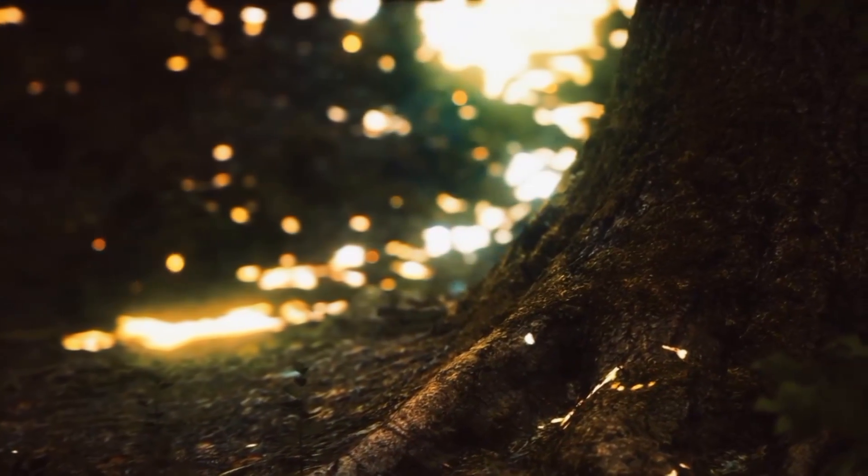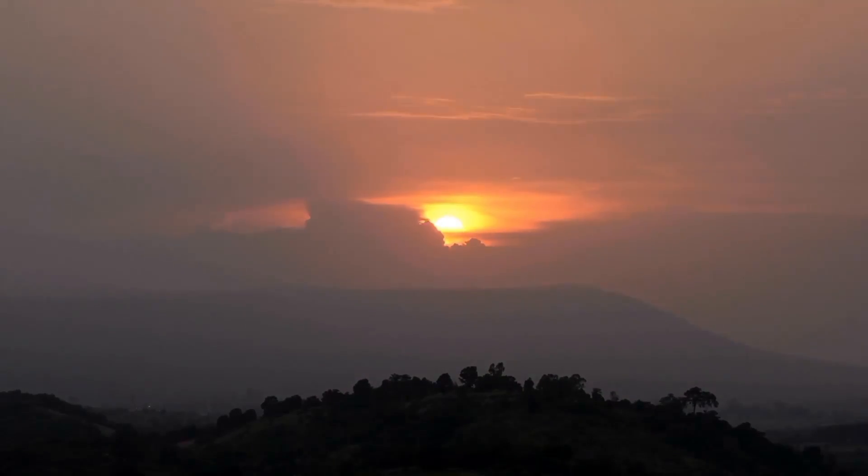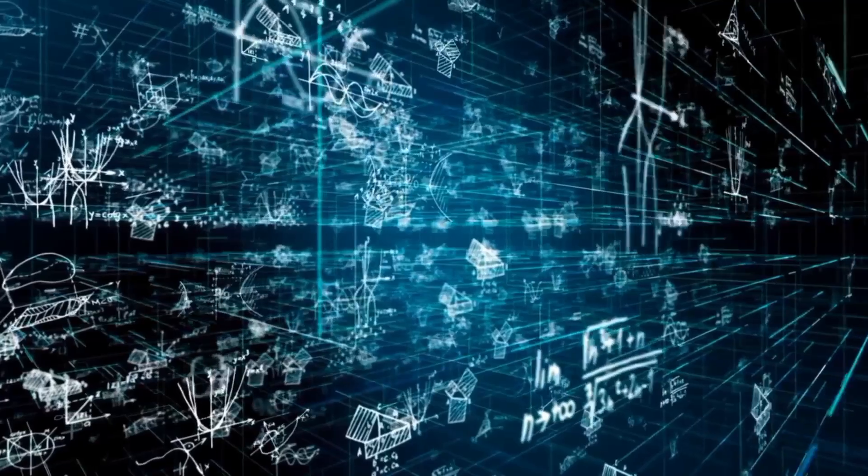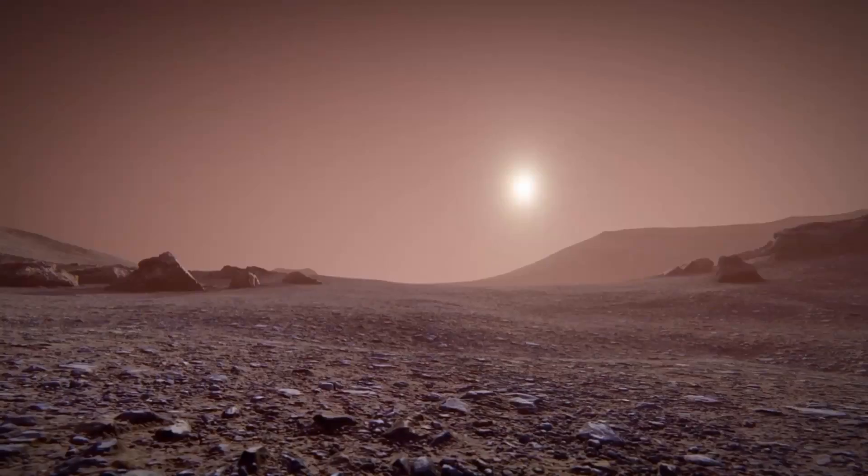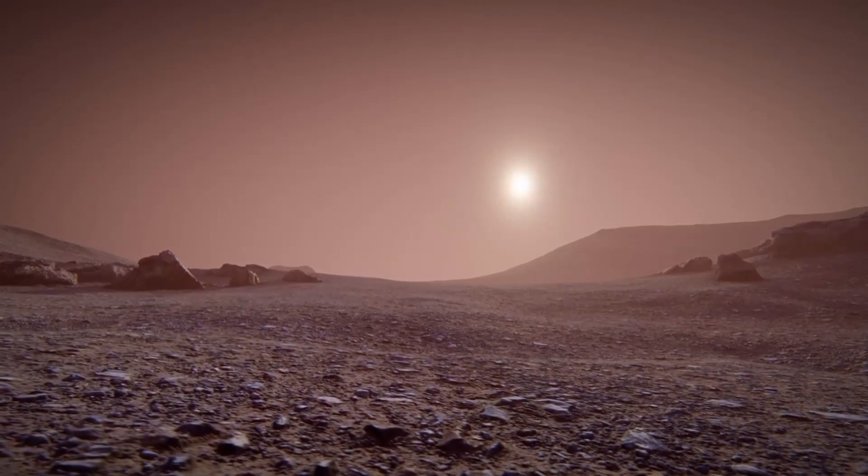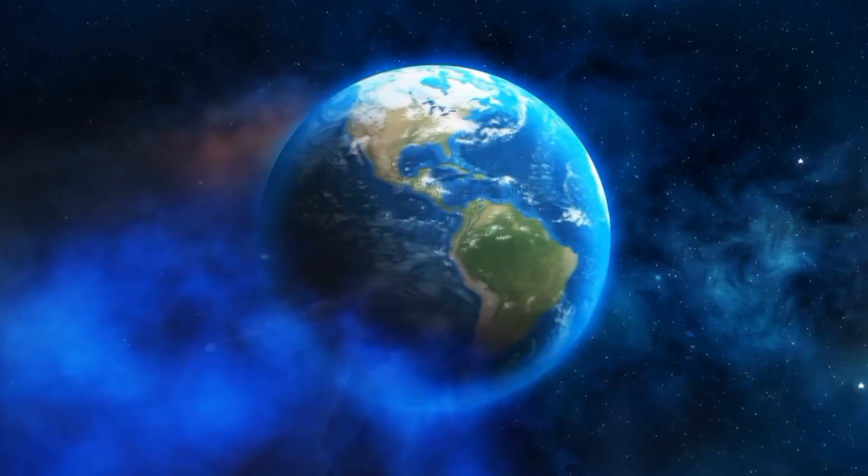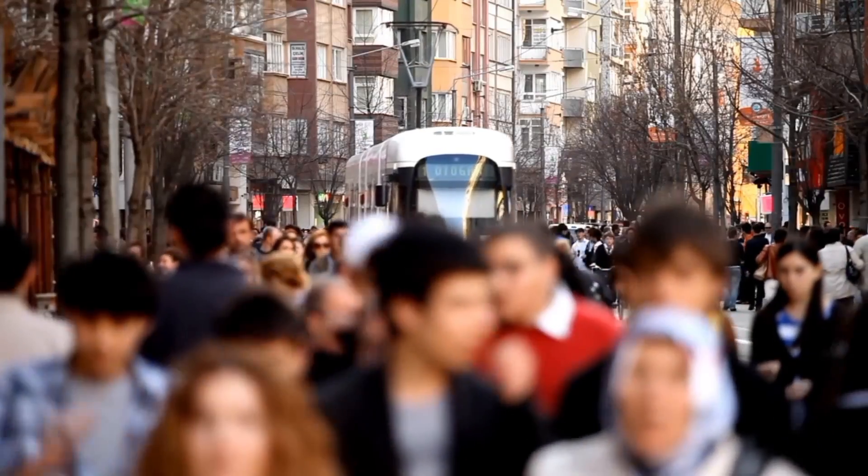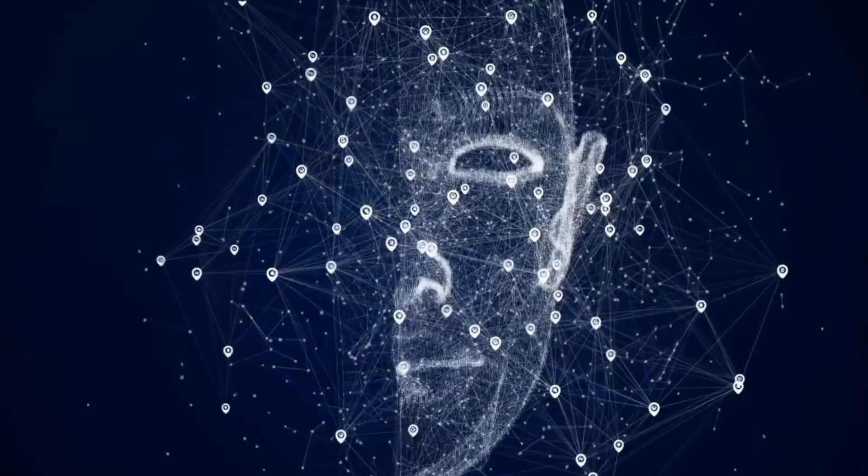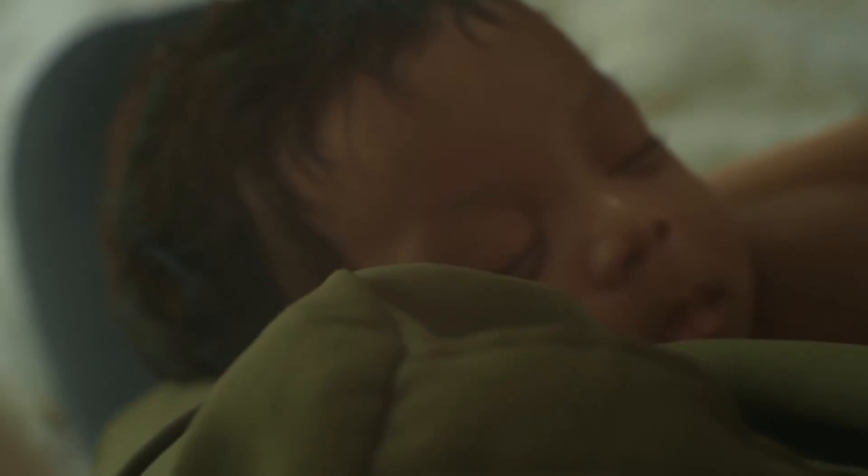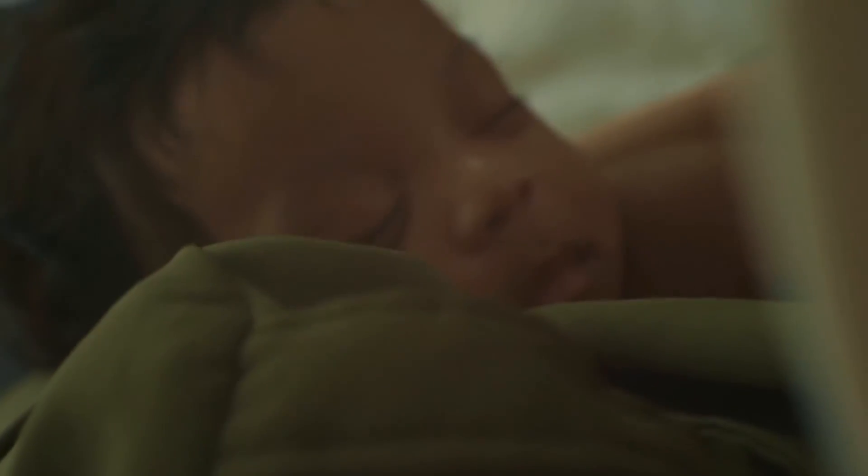However, life might not emerge effortlessly, even in the most favorable conditions. The fact that we can't form life in a lab tells us that it is not a simple process. There are no civilizations on Mars, even though it is located in the habitable zone. Earth's life took around a billion years to originate, and another few billion years to develop us humans.